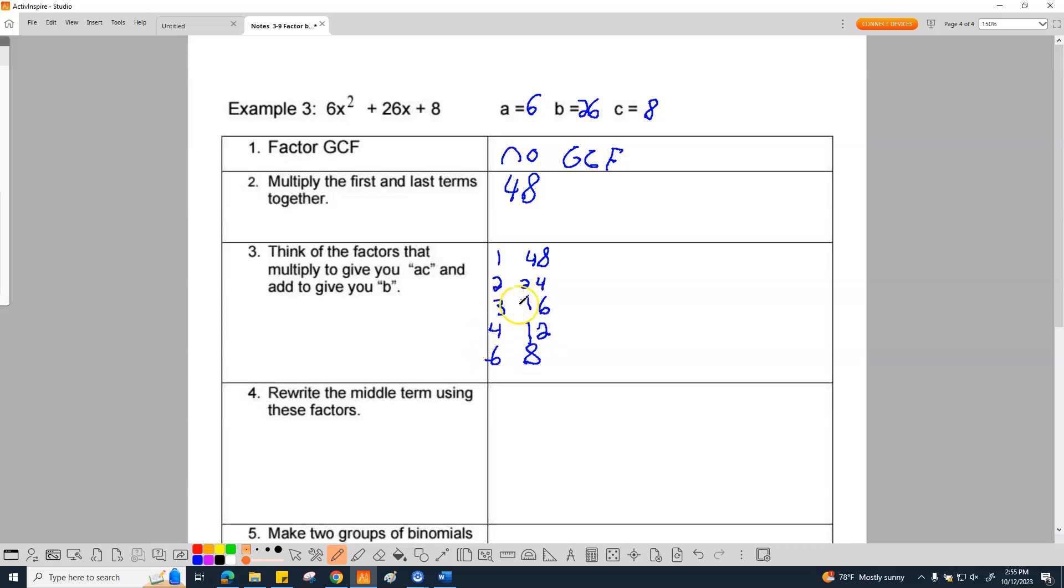So I want to find ones that add up to 26. Check it out. 2 and 24, there's a way to add that to 26. 3 and 16? Nope. 4 and 12? Nope. 6 and 8? Nope. So I am going with this one right here.